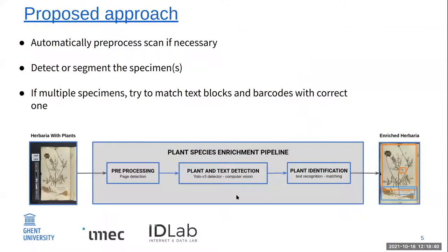Our proposed approach is to first preprocess the images — normally they are photographs and need some preprocessing. Since they are herbarium books, there are occlusions happening because of the thickness of the book. We try to remove these based on our preprocessing page detection algorithm and then do detection based on detectors and Mask-RCNN. We also did a test run on how text detection works with regards to text recognition algorithms.